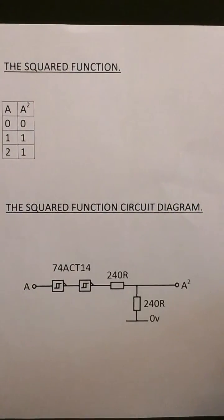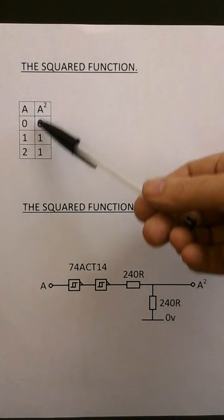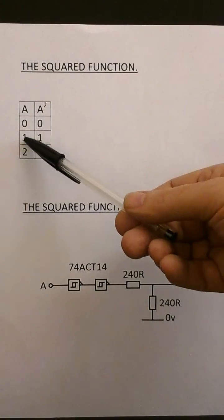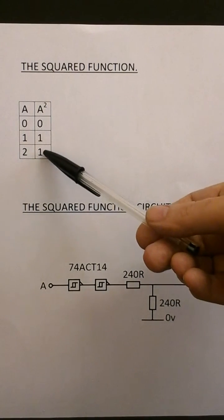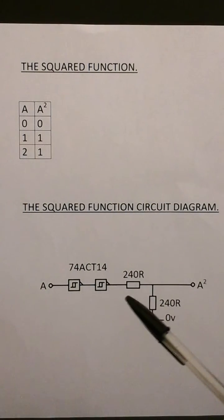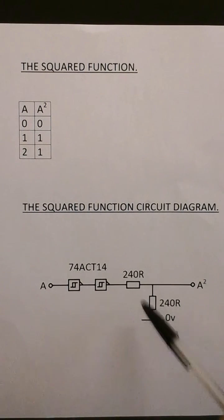One last thing, just for completeness. I'll introduce the squared function which is part of the modulo 3 sum and product algebra. Basically it just squares the input. So 0 times 0 is 0. 1 times 1 is 1. 2 times 2 is 4 modulo 3, which is 1 modulo 3. And basically it's just two inverters with a resistor network to give a ternary logic 1 on the output.